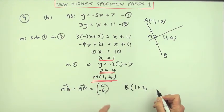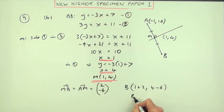So that means you go 2 along, 6 down. How do you get to B? 2 along, 6 down. If I start at 1, I go 2 along. If I start at 4, I go 6 down. So B is the point (3, -2).